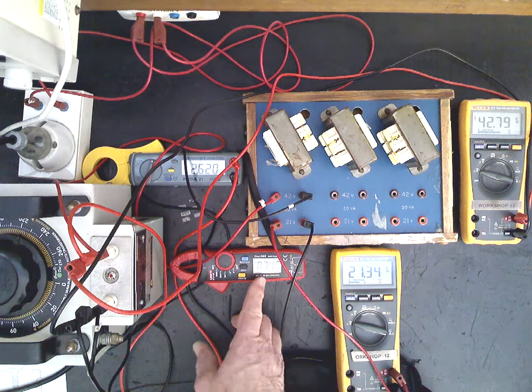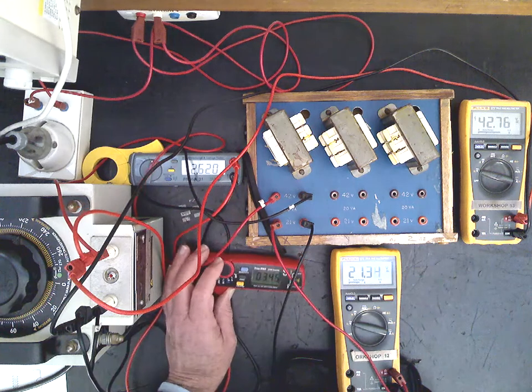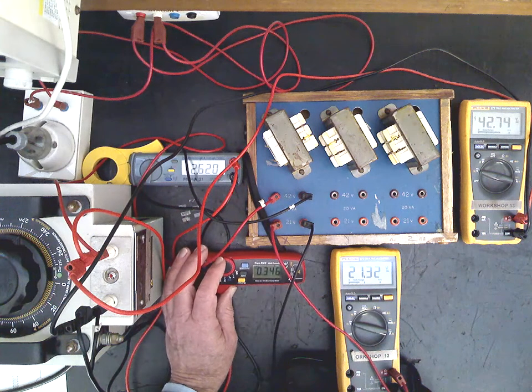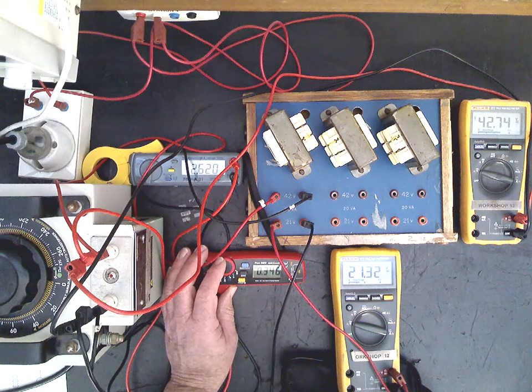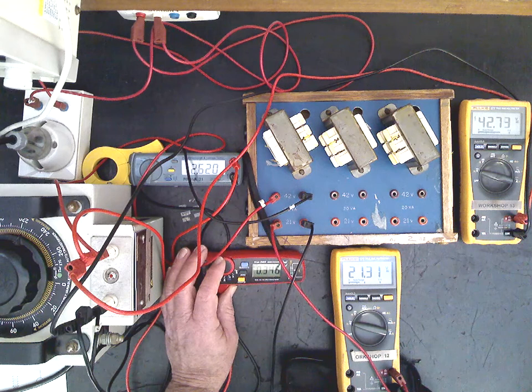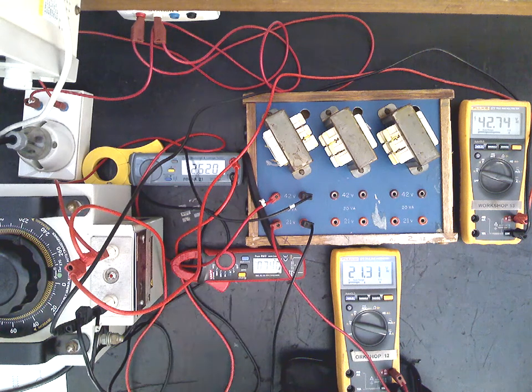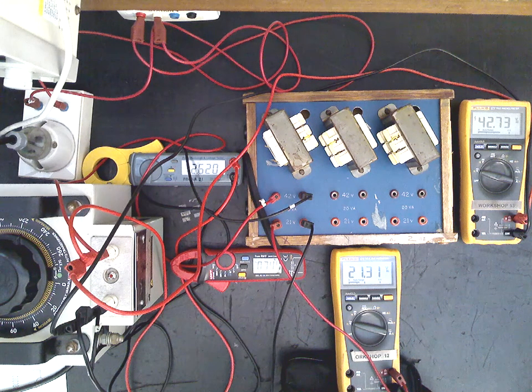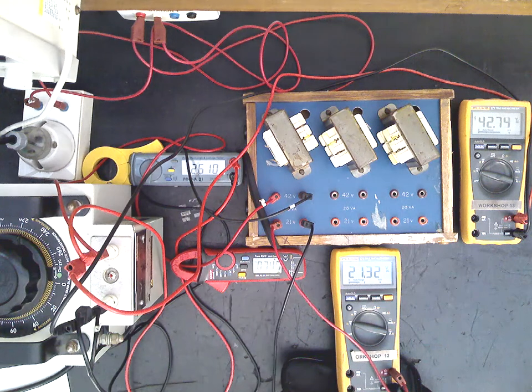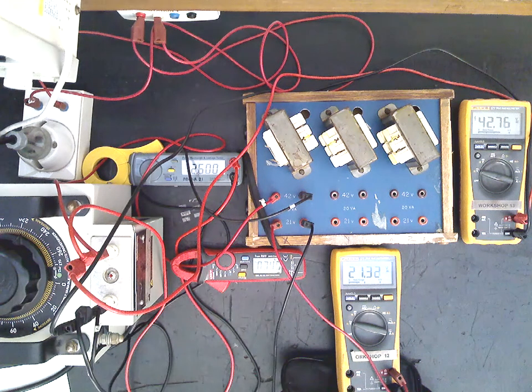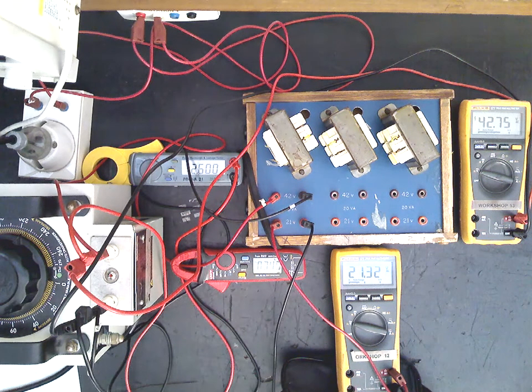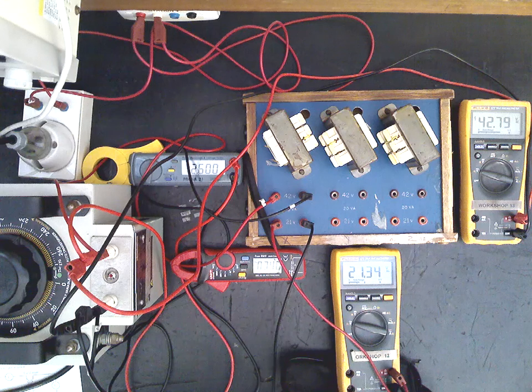The current in the primary is 0.35, 0.346, which is about 350 milliamps, 346. And then we can record those details and we'll be able to work out the efficiency of the transformer once we get the copper loss on the next test.